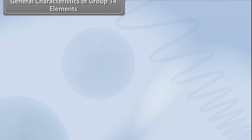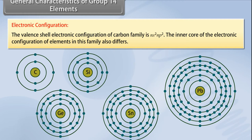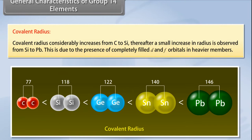General characteristics of group 14 elements: The valence shell electronic configuration is ns² np². The inner core of electronic configuration also differs among elements. Covalent radius considerably increases from carbon to silicon; thereafter a small increase is observed from silicon to lead, due to the presence of completely filled d and f orbitals in heavier members.